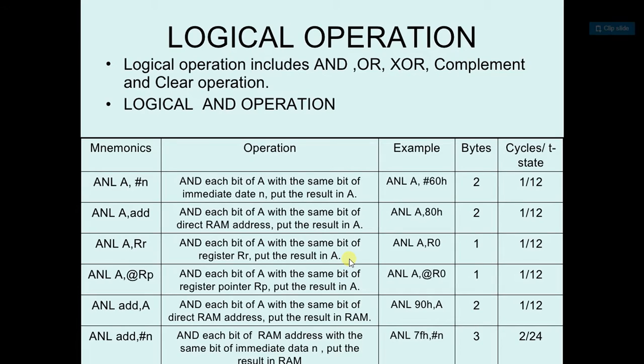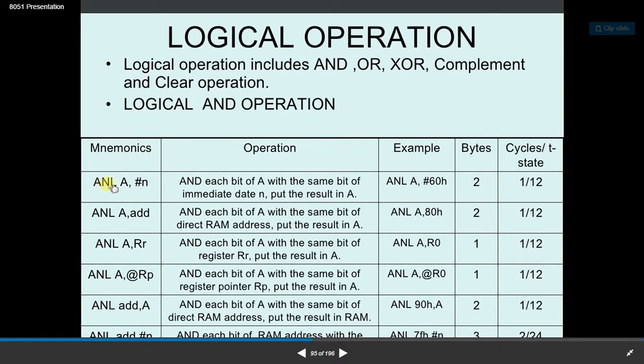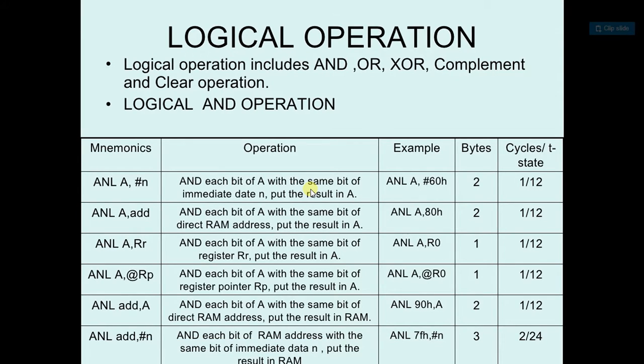For AND operation, there is an instruction called ANL. ANL A, #n will AND each bit of A with the same bit of immediate data. It will do the AND operation between A and the data which is provided at n.